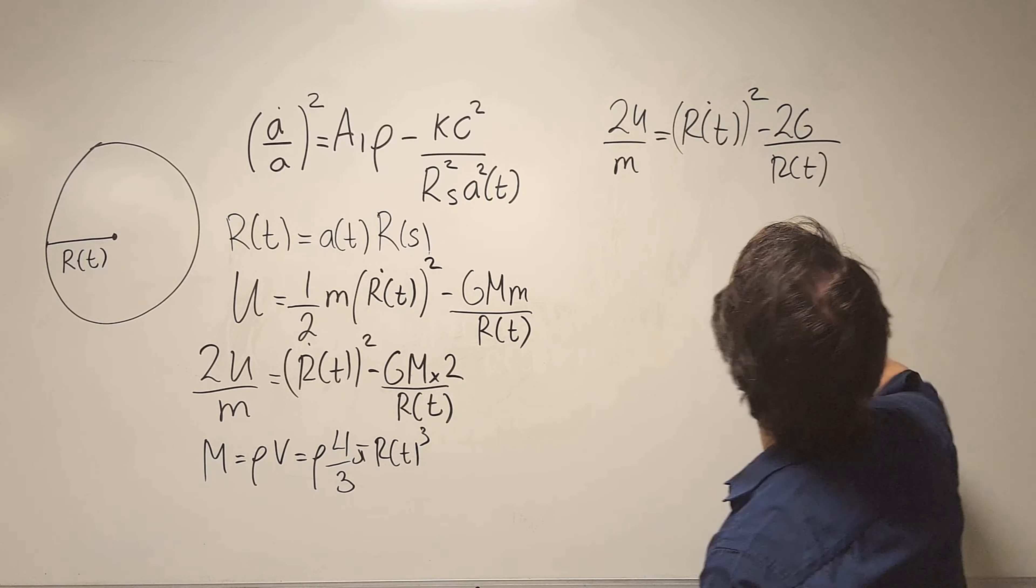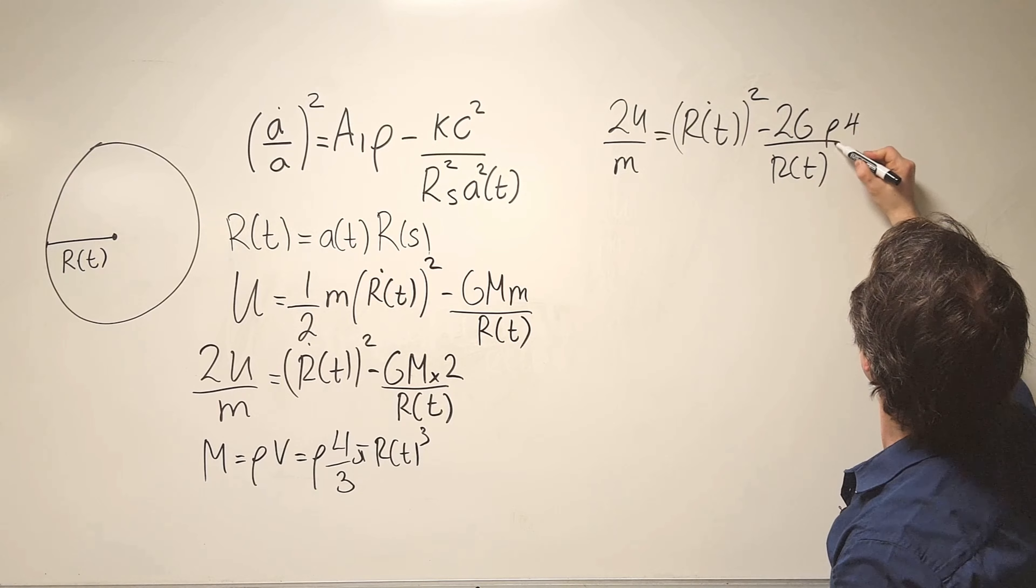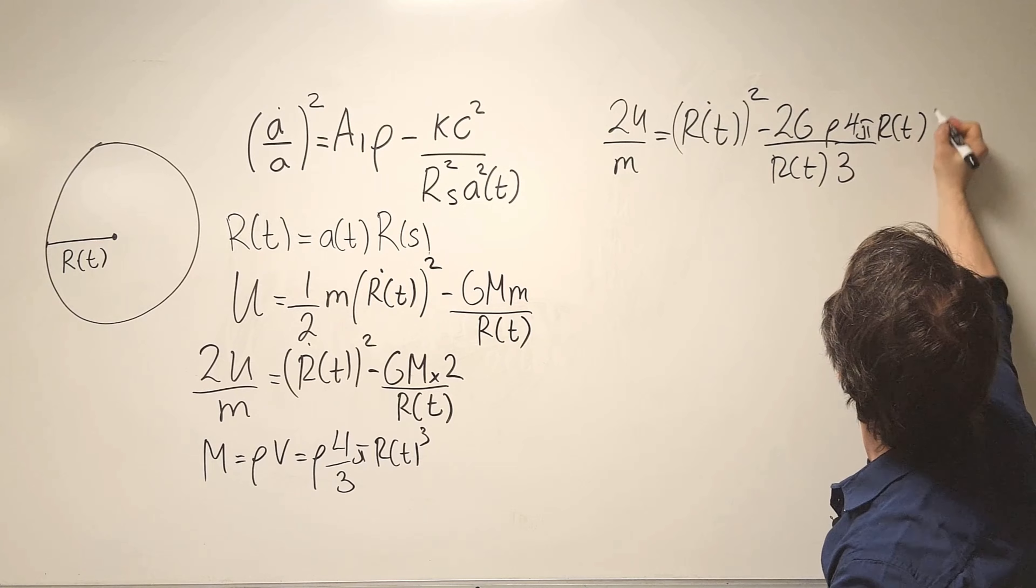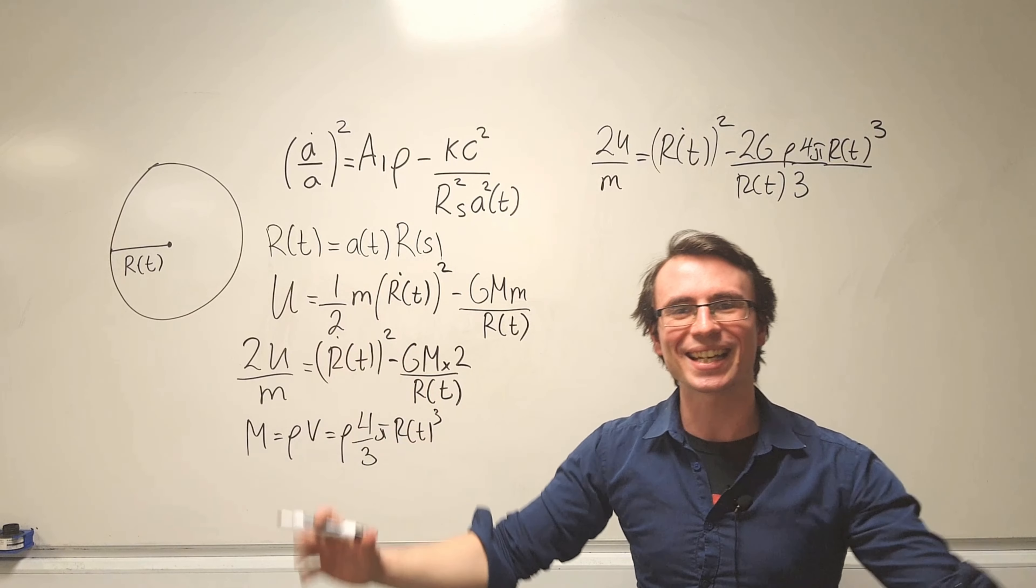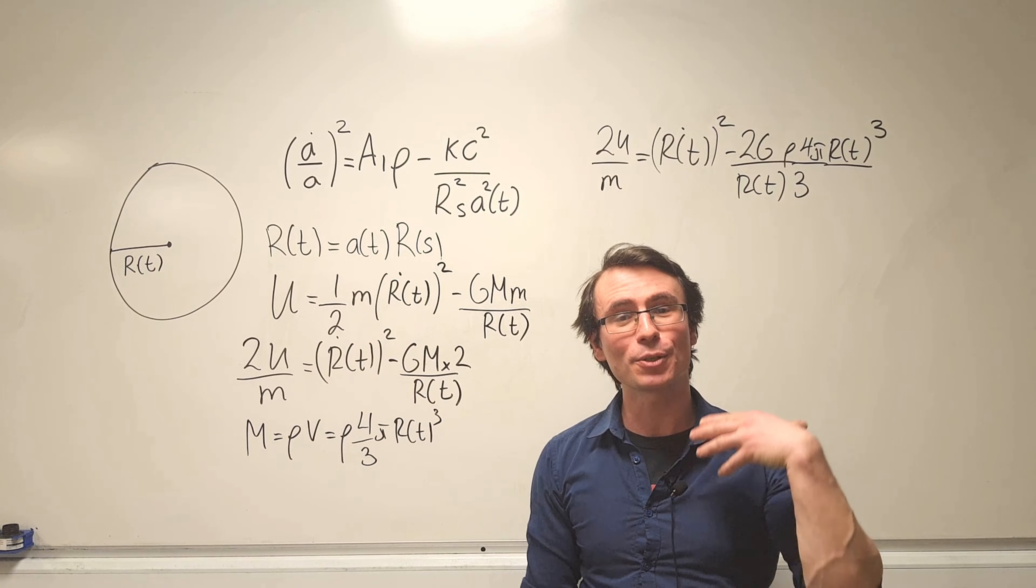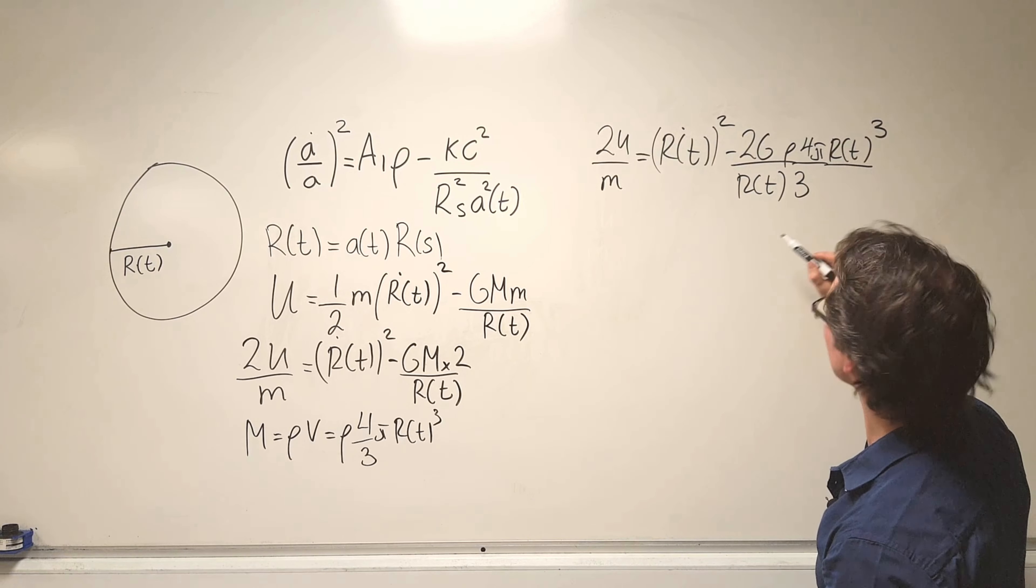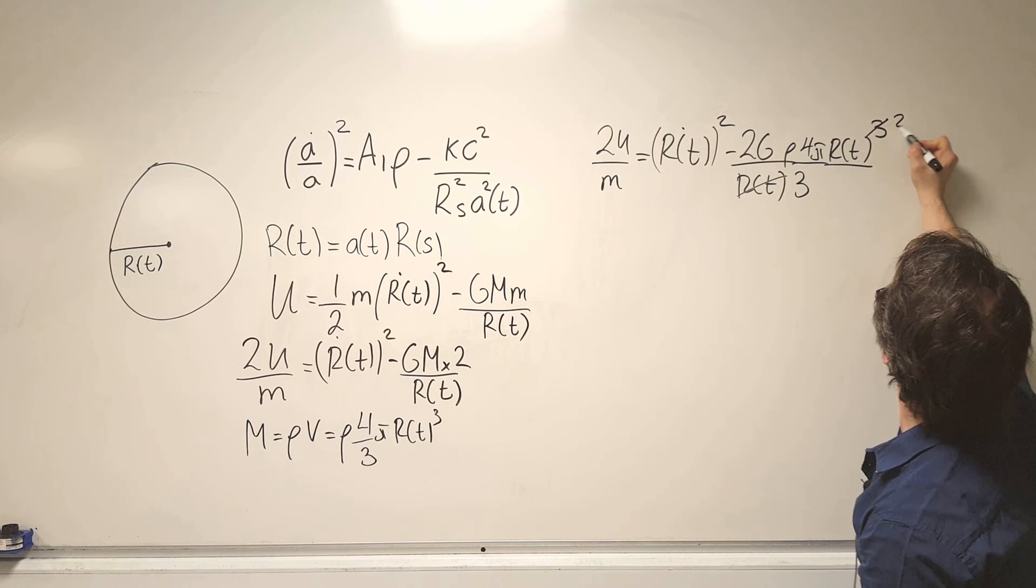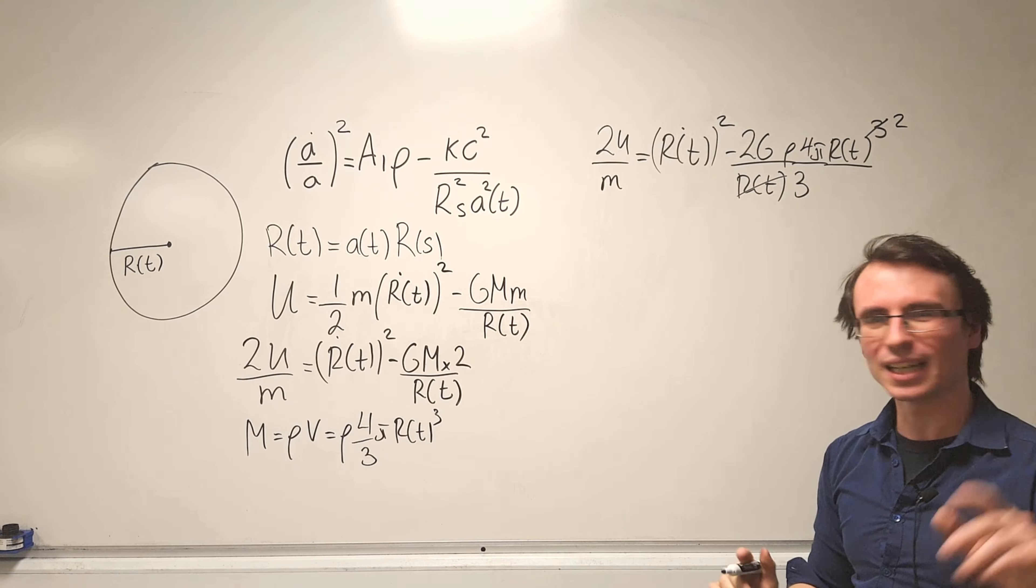Take away then we're going to have 2G over R(t). Now expression for m is just rho, then we have four thirds pi and then R(t) cubed. Now we can do one of my favorite things in calculus and that will be cancelling terms out of an equation. So we can cancel out this R(t) here that will leave us a square.